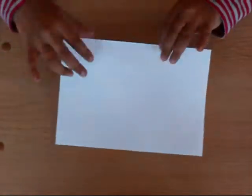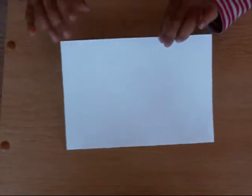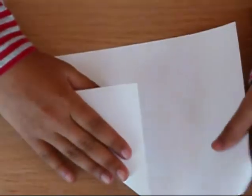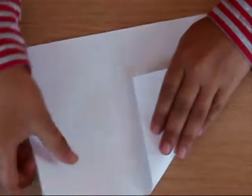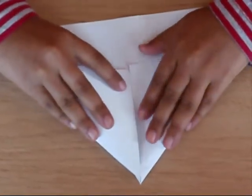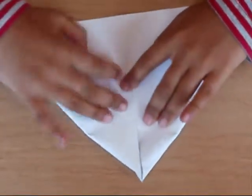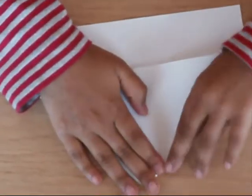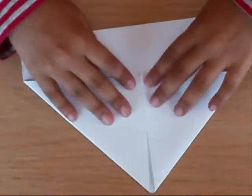Then we'll turn it round and we'll make sure this flap, the first flap, is facing towards us. Then we'll get one of the corners and we'll measure to see if they're the right size. So then we shall fold it like that.